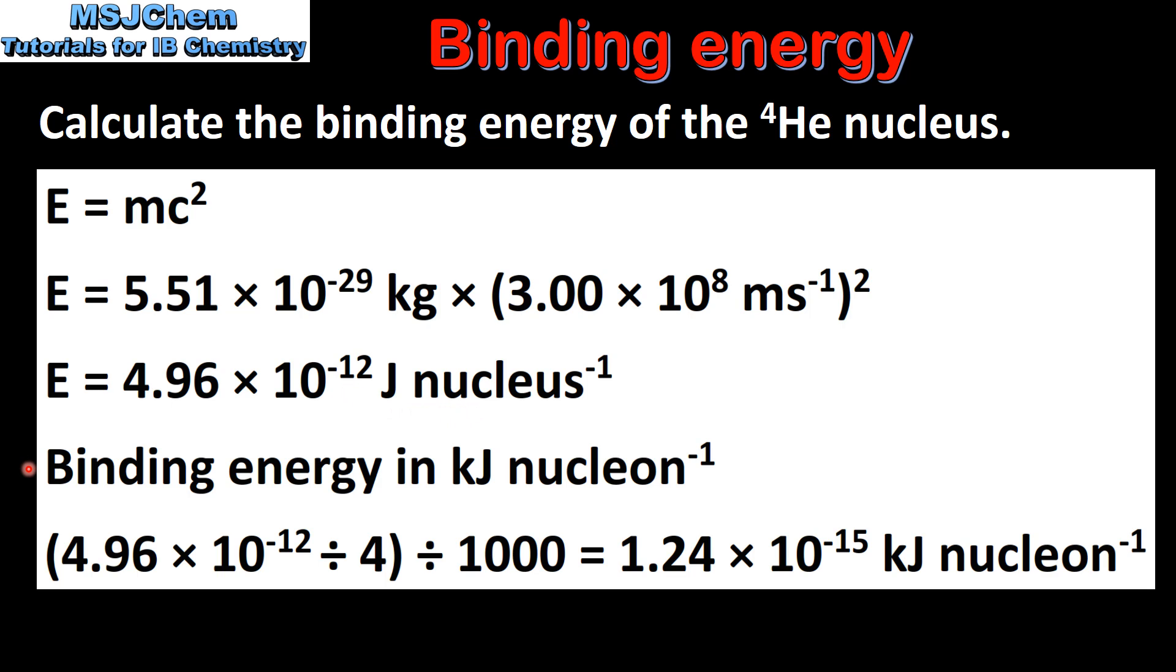Next we will calculate the binding energy in kilojoules per nucleon. To do this we divide the energy released in joules per nucleus by the number of nucleons in a helium-4 nucleus, which is 4. We then divide by 1000 to convert to kilojoules, which gives us 1.24 times 10 to the negative 15 kilojoules per nucleon.